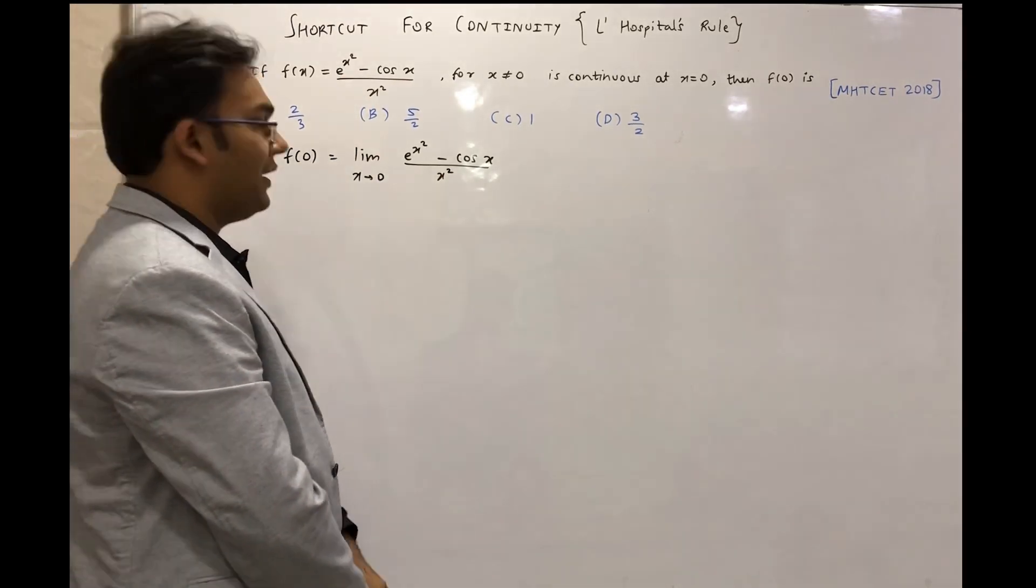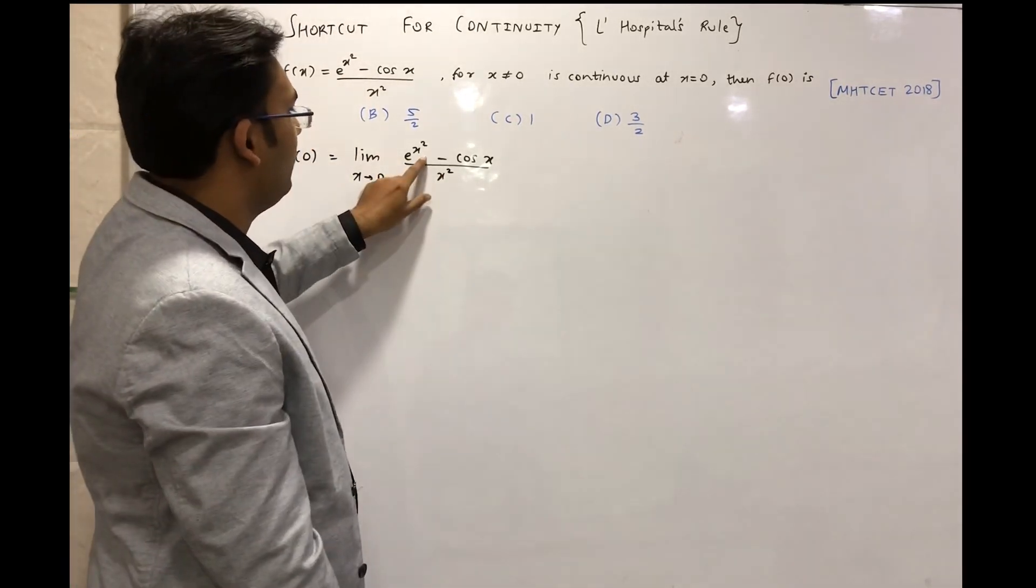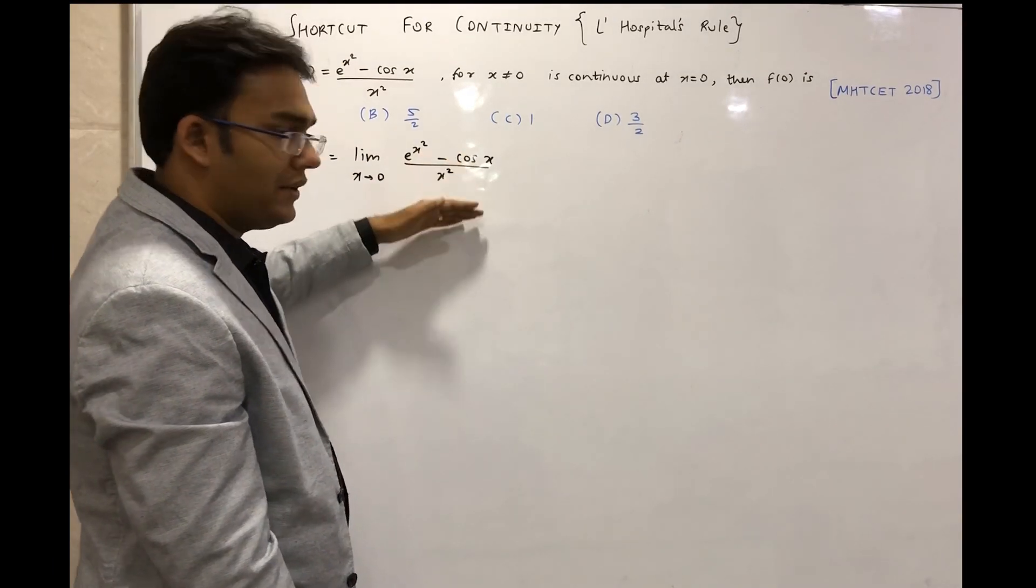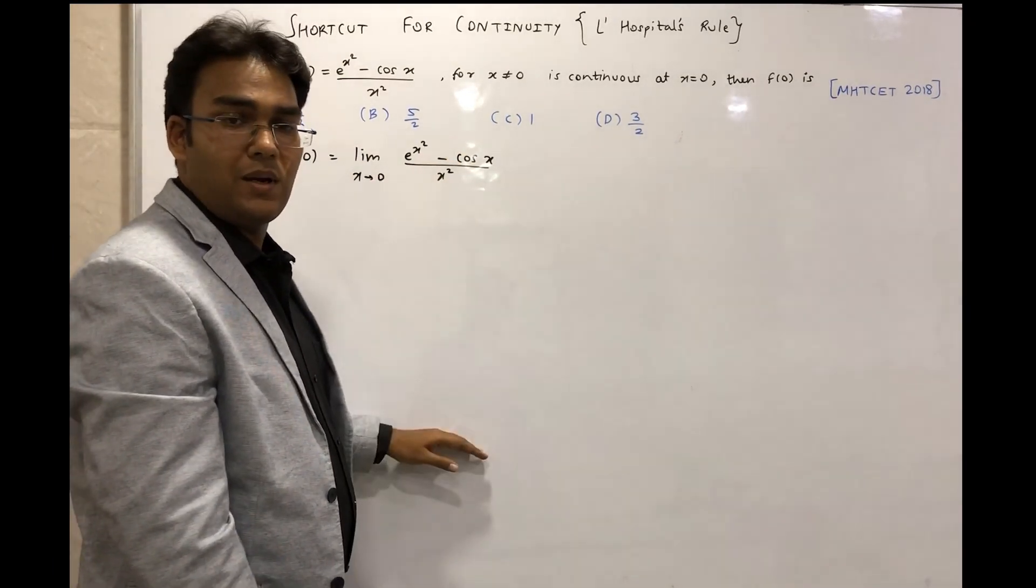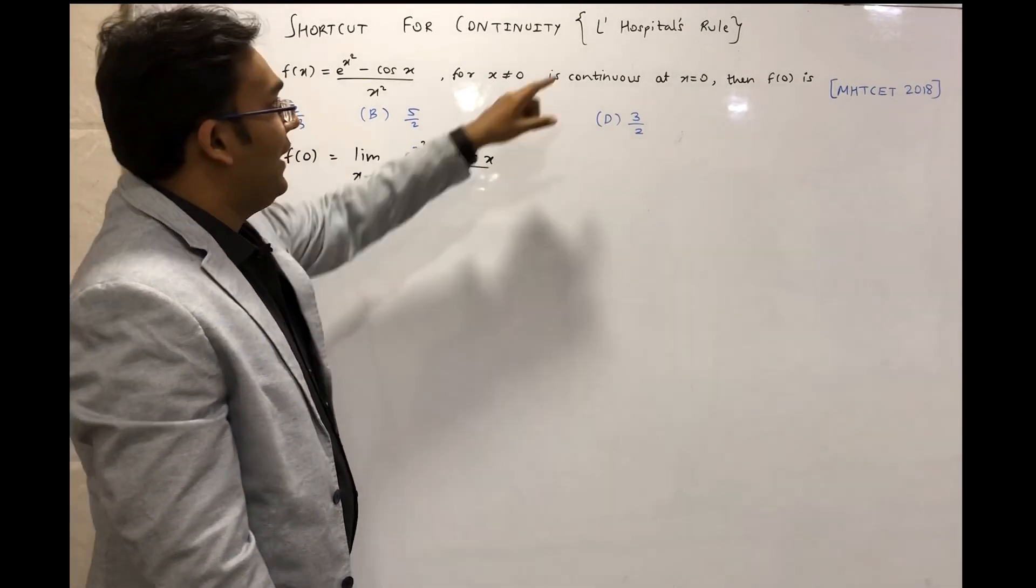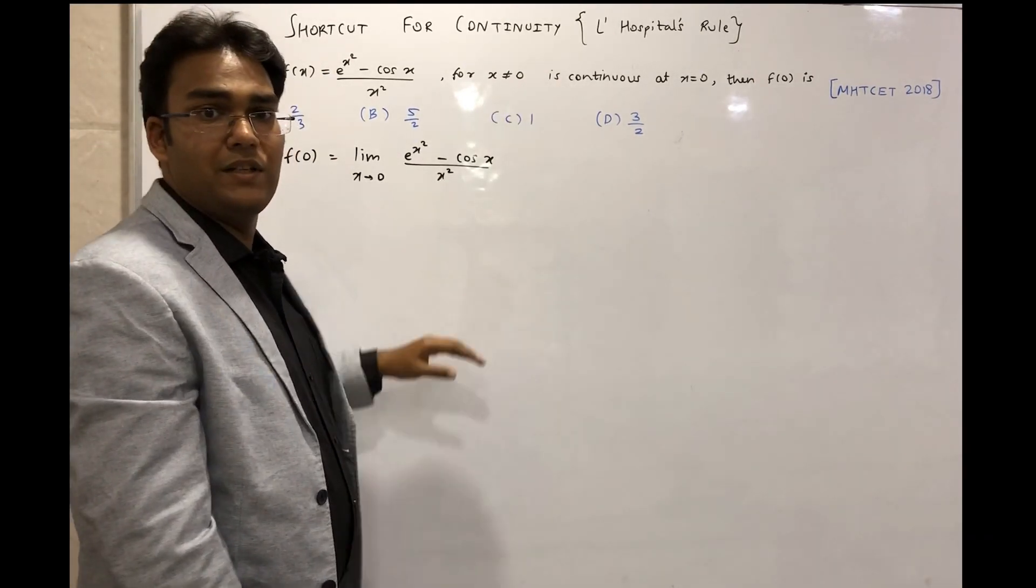By the regular method we have to subtract 1 and add 1 and the process is very lengthy. So this sum can be solved with the help of L'Hospital's Rule which is very easy to use.